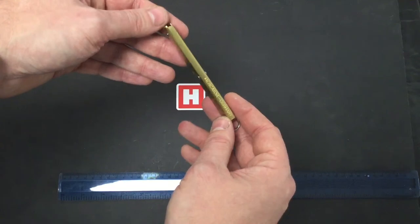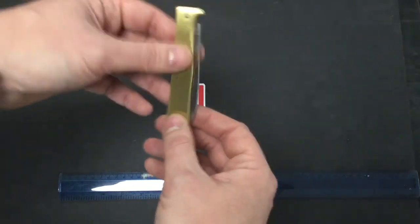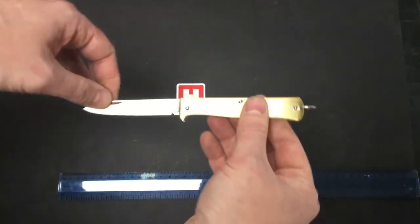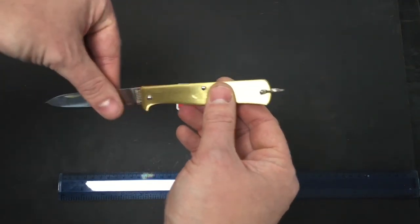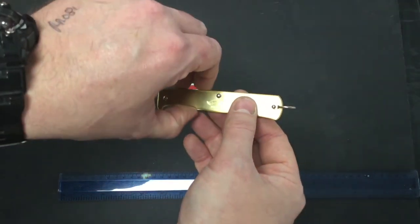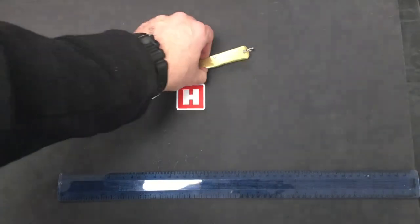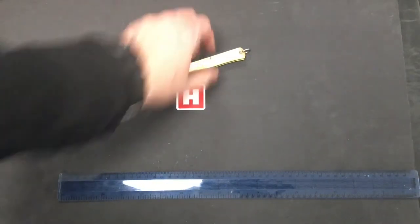Just a very traditional quality gentleman's slip joint knife. Let's pop them down. From Otter, that's the small brass MECAT.